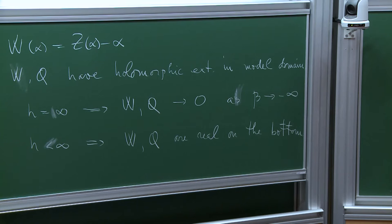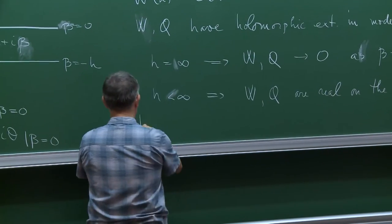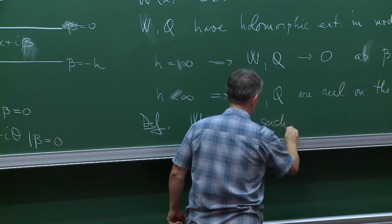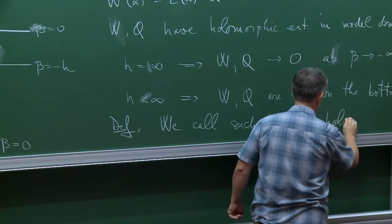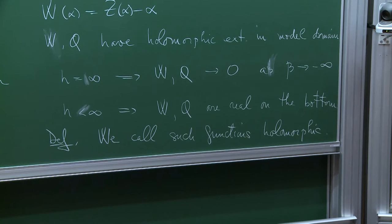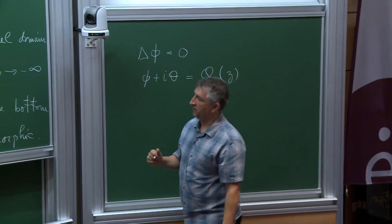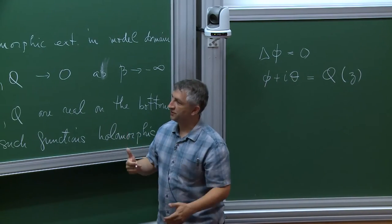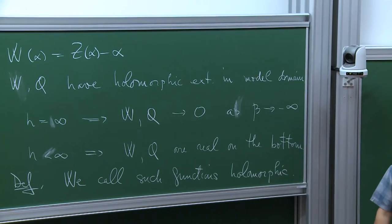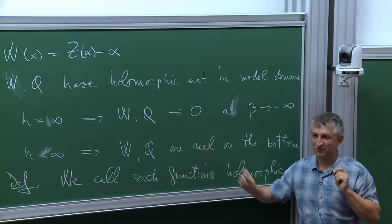From here on, our functions live in this class: they have holomorphic extensions in the model domain, and they either decay on the bottom or are real on the bottom. Because of these conditions, what happens on the top uniquely determines what happens in the entire domain. We call such functions — with a slight abuse of terminology — holomorphic: traces on the top of holomorphic functions satisfying boundary conditions on the bottom.